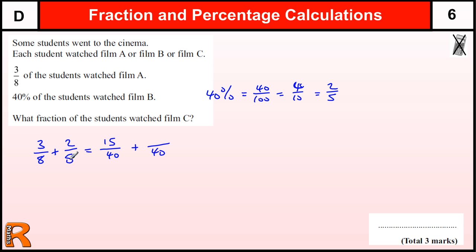To make two-fifths out of 40, we times by eight, so we times five by eight to get 40. Two times eight is 16. And that would give us 31 out of 40 students watched A and B.